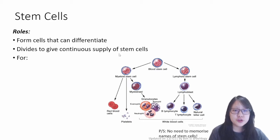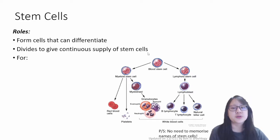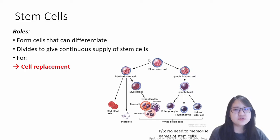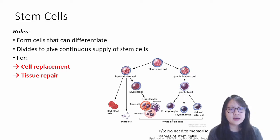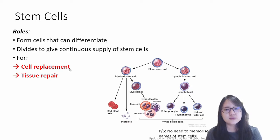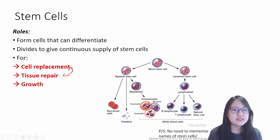They divide to give a continuous supply of stem cells. This is really for cell replacement and tissue repair, and growth of multicellular organisms.